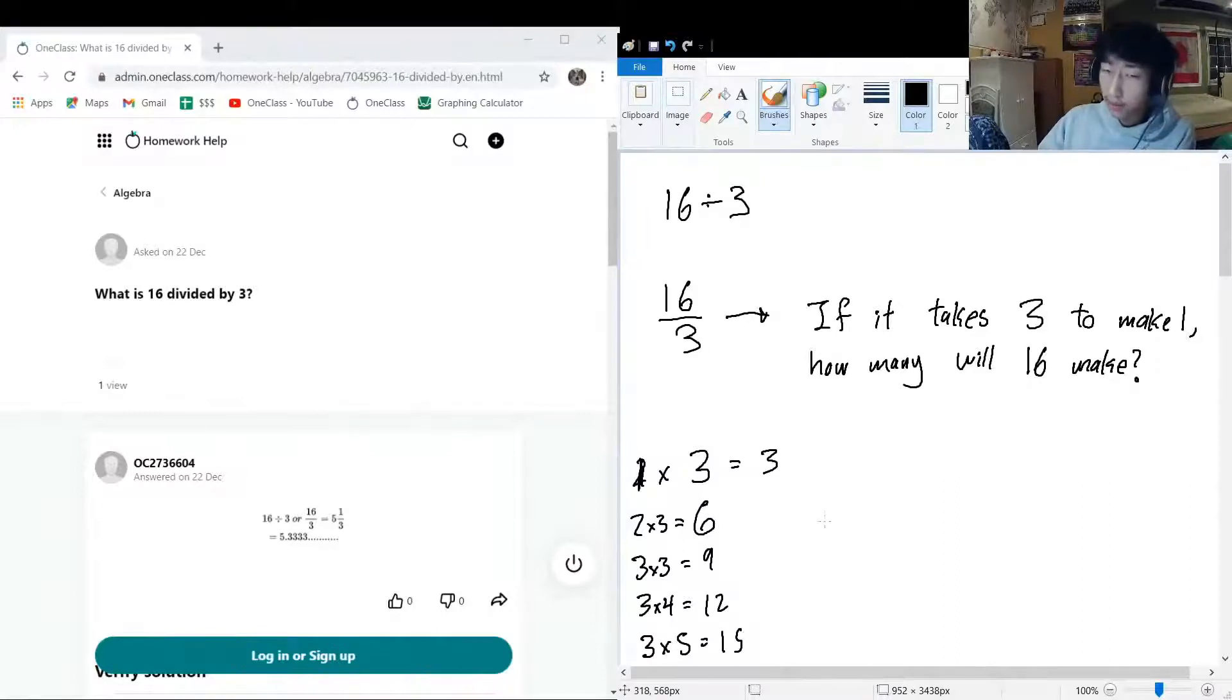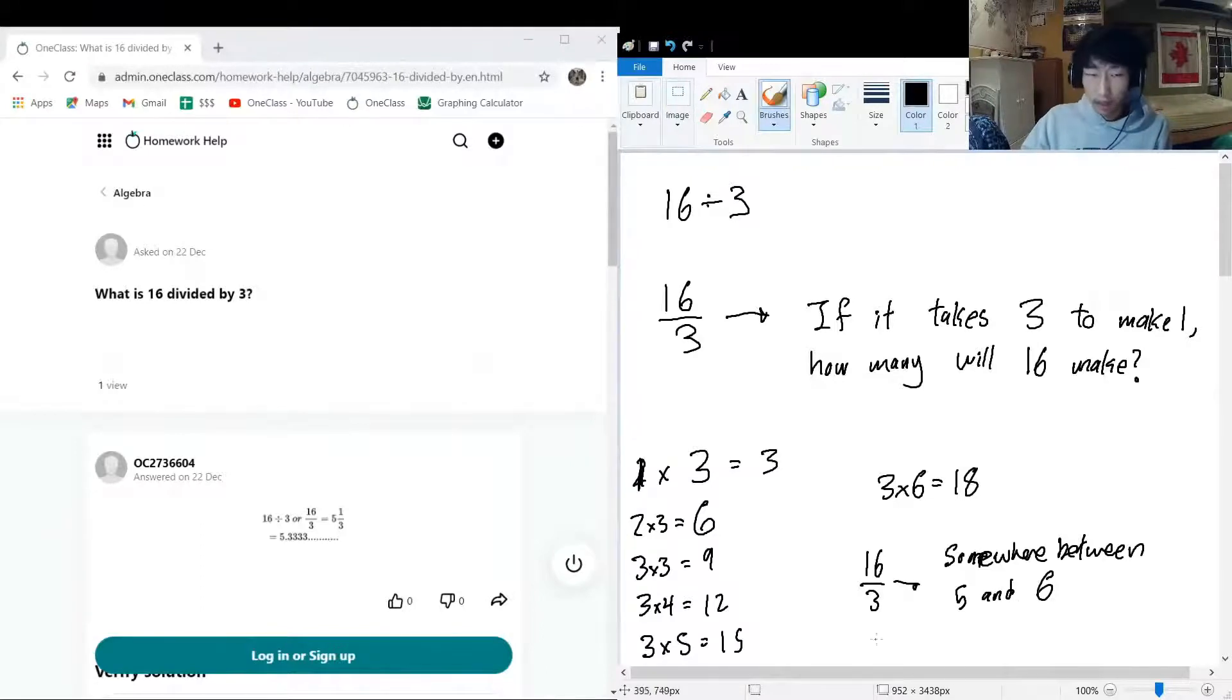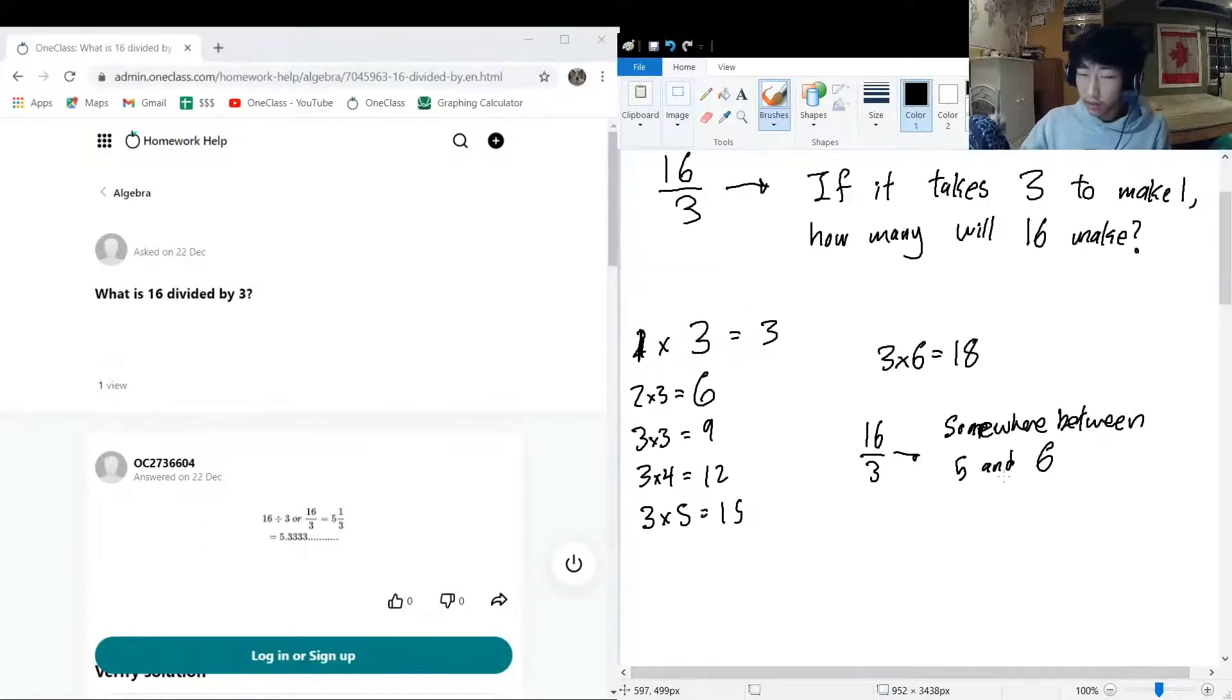Okay, we're really close. But if we were to do something like 3 times 6, it's 18. A little too much there. We know that 16 over 3 has to be somewhere between 5 and 6.